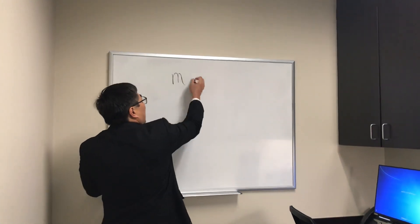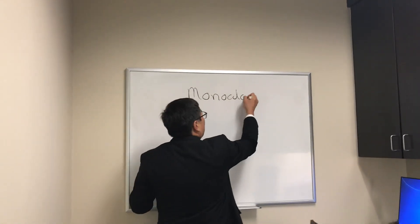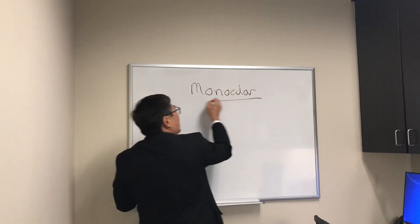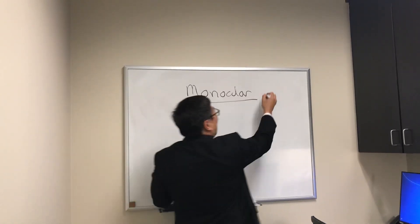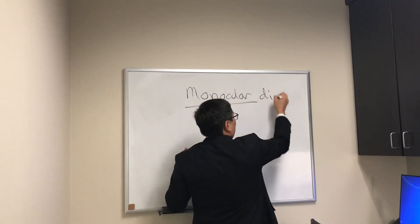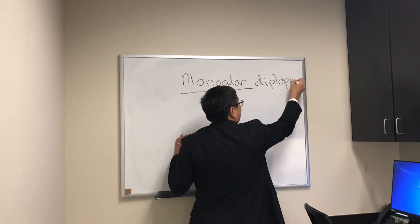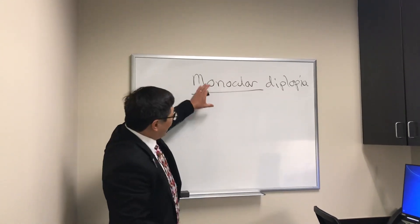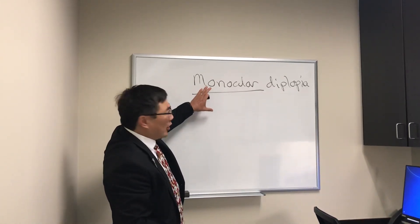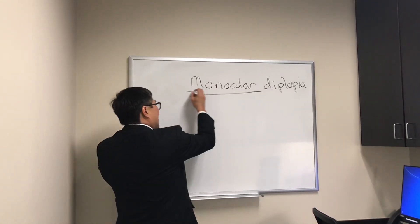Today we're going to be talking about monocular diplopia. Normally monocular diplopia is not a neuro-ophthalmic problem, because normally that means the problem is in your eye. So the first question we want to know is: is it really one eye?